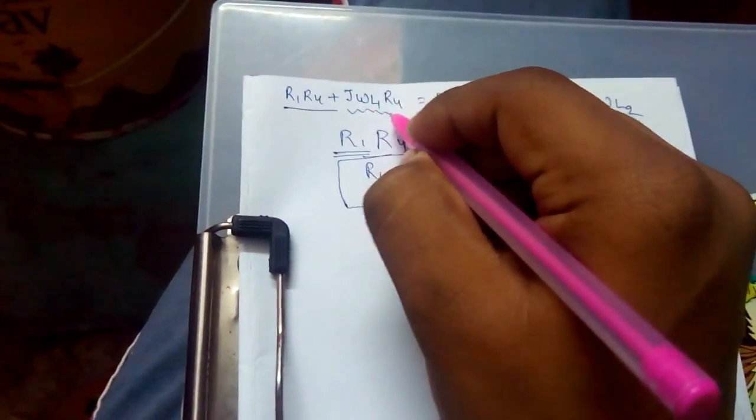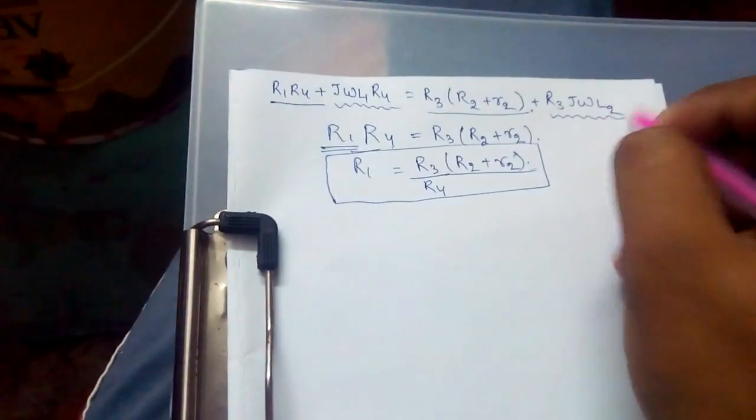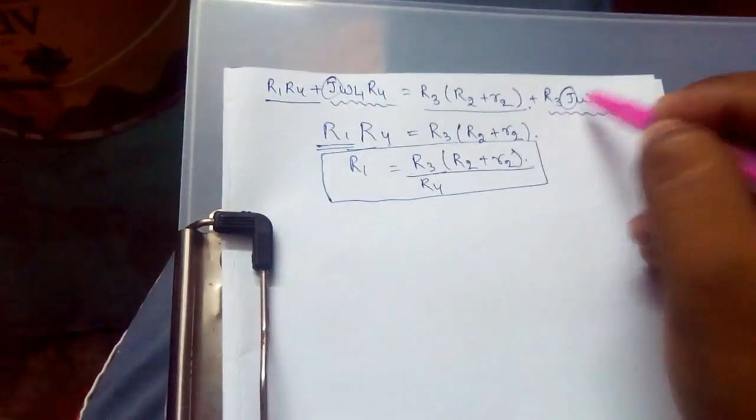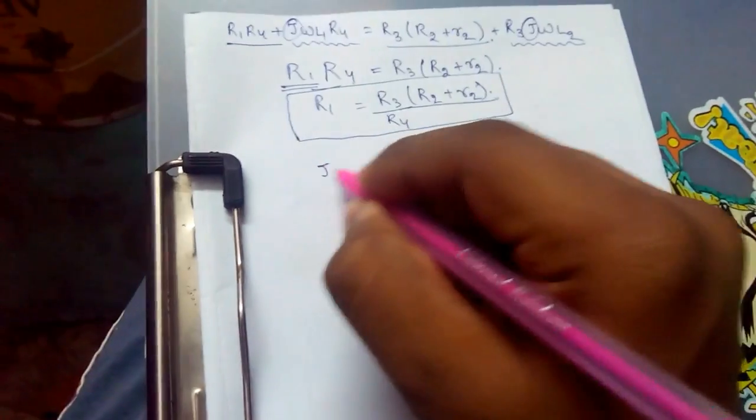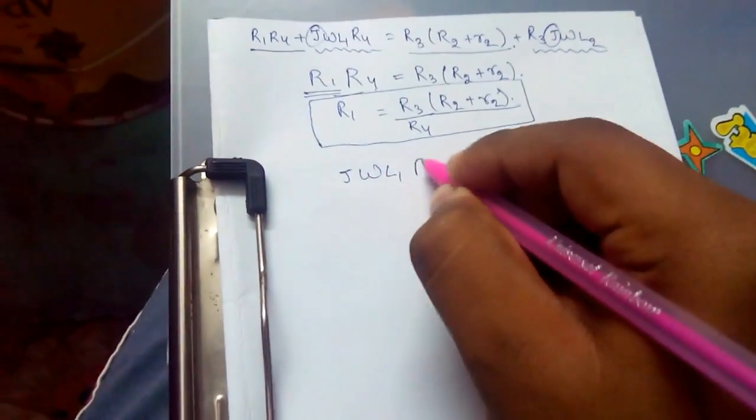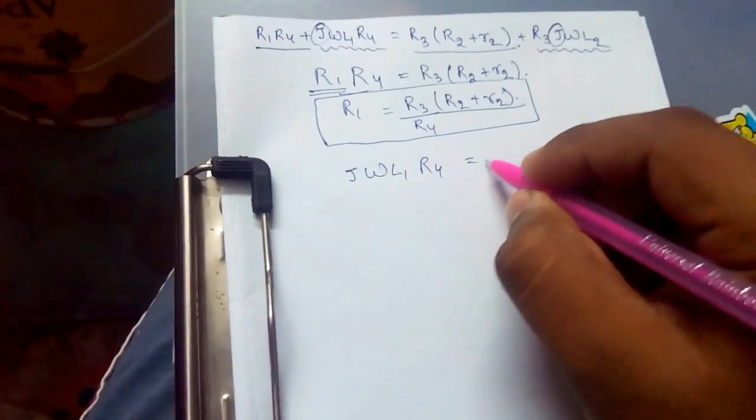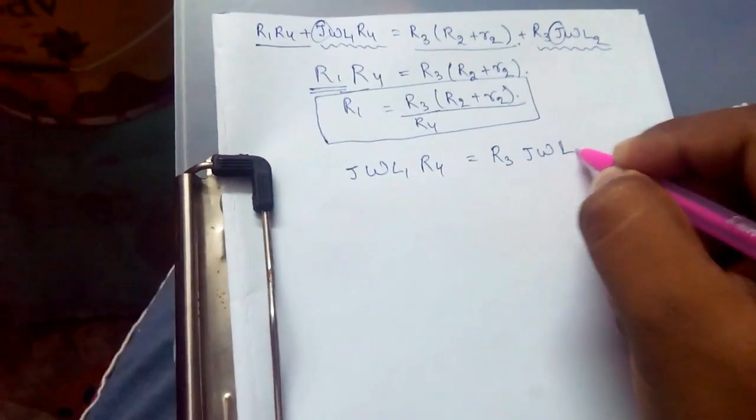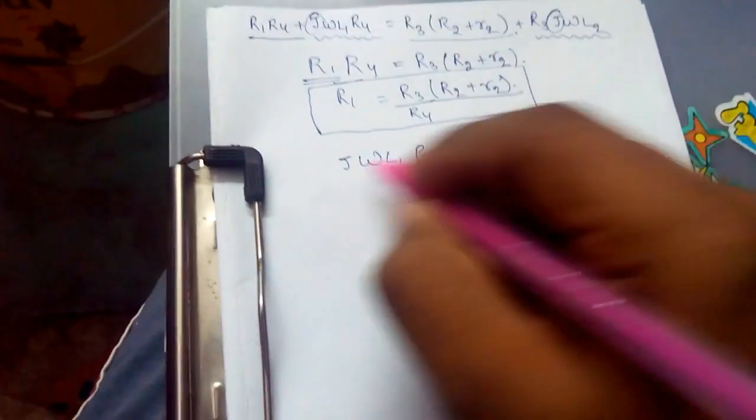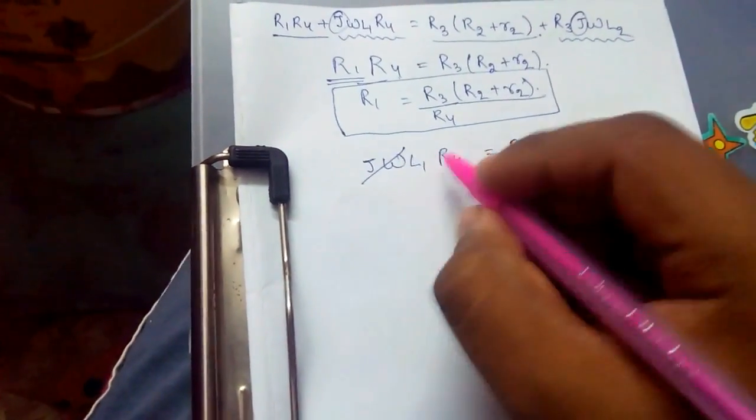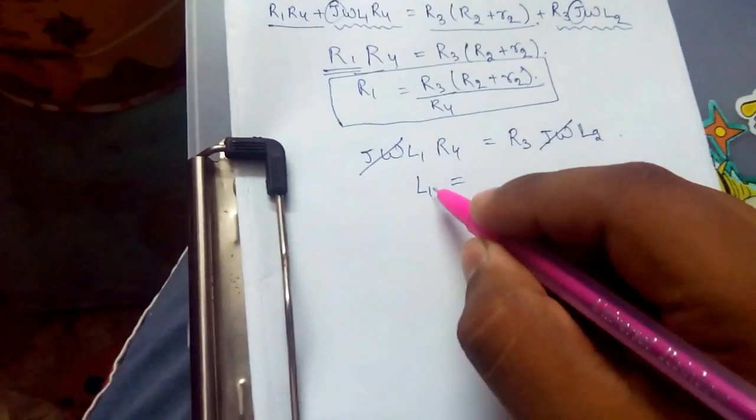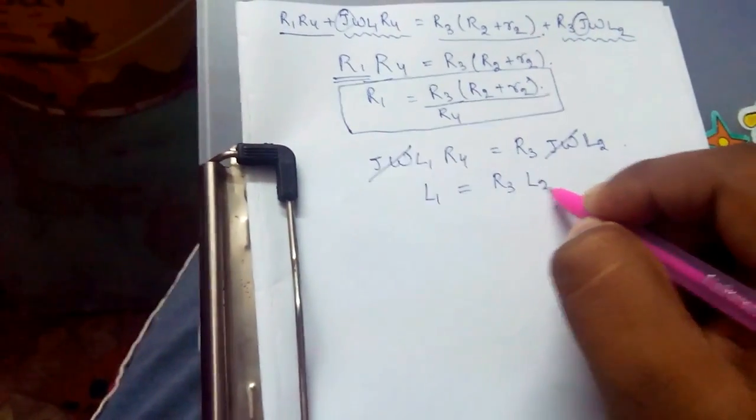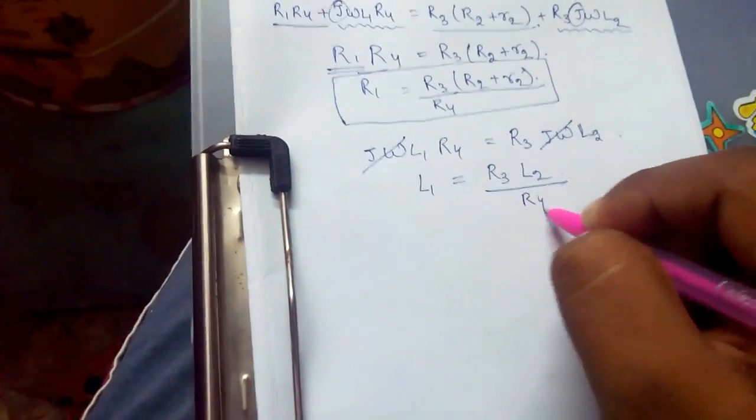Similarly, by equating the complex terms—complex terms are those which contain the function j. That is j omega L1 R4 equals R3 j omega L2. J omega would get cancelled. Therefore, unknown inductance L1 would be equal to R3 L2 divided by R4.